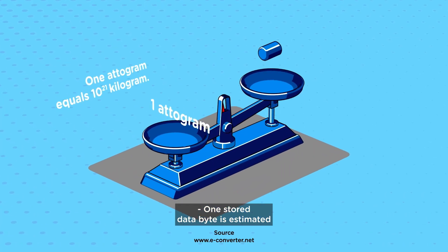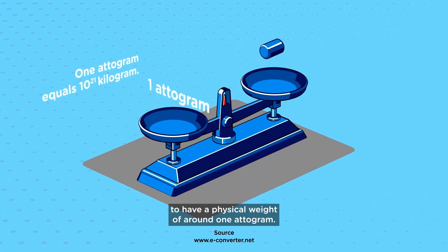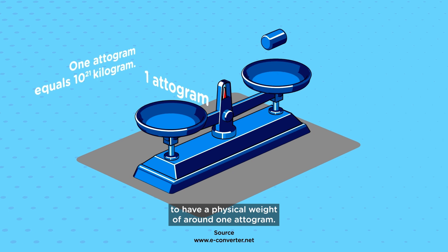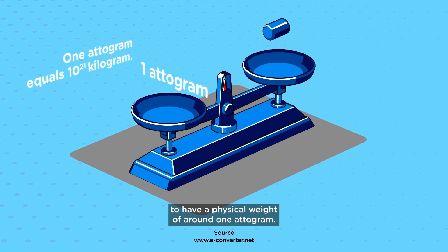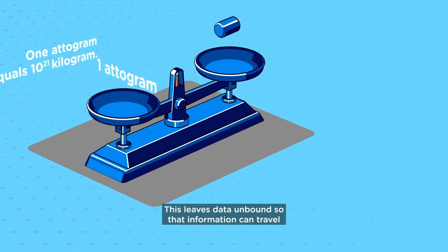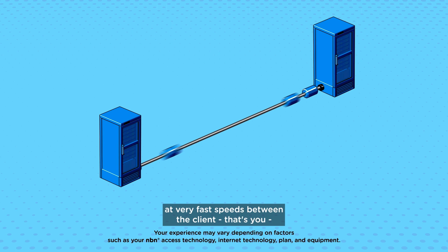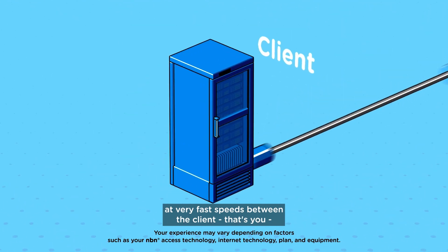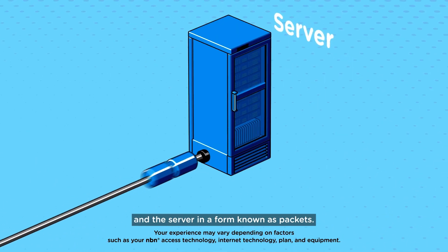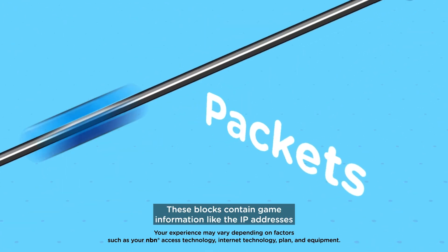One stored data byte is estimated to have a physical weight of around one attogram. This leaves data unbound, so that information can travel at very fast speeds between the client — that's you — and the server, in a form known as packets.